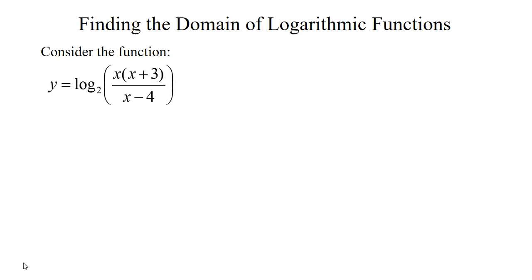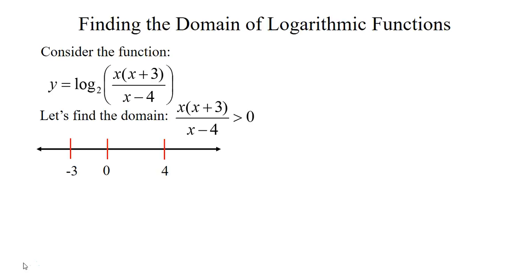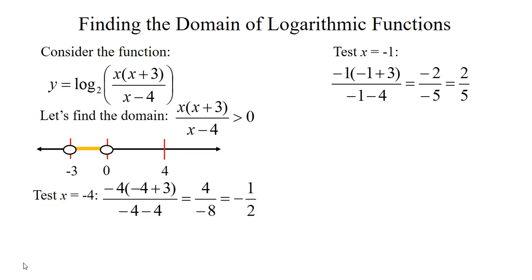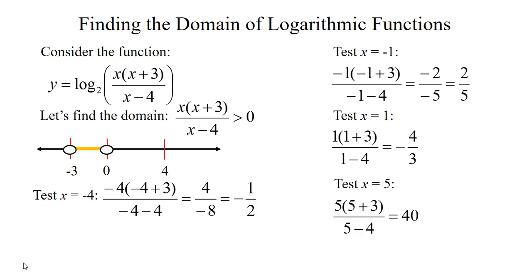Here's our next example: log base 2 of x times x plus 3 over x minus 4. It's a ratio, so we find key points where it equals 0 or is undefined. It equals 0 at x equals 0 and x equals negative 3, and is undefined at x equals 4. Testing x equal negative 4, I got a negative — not part of the domain. Testing x equal negative 1 (between negative 3 and 0), I got a positive — included in the domain. Between 0 and 4, I tested 1 and got a negative — not included. Beyond 4, I tested 5 and got a positive — included. So the domain is from negative 3 to 0 and from 4 to infinity.